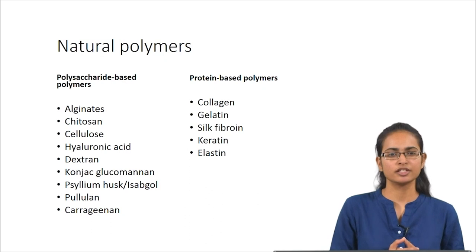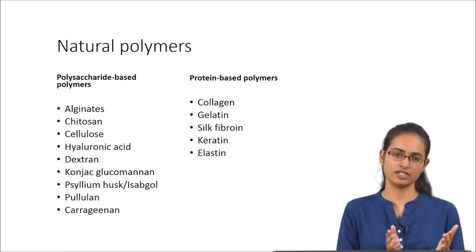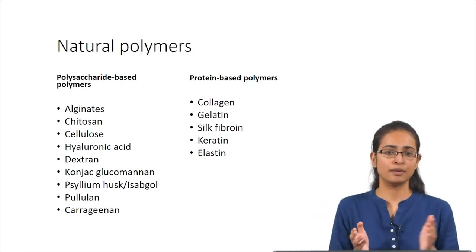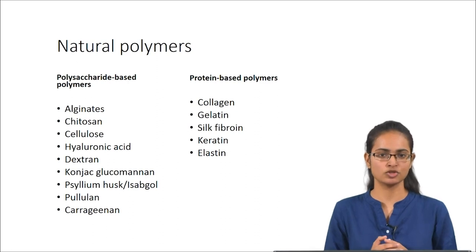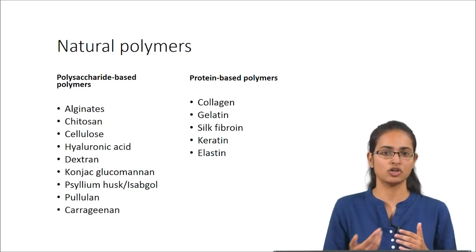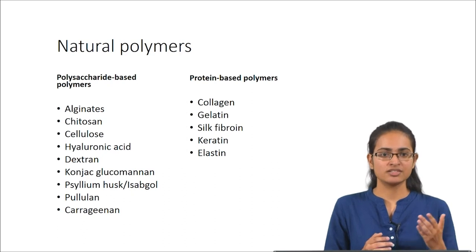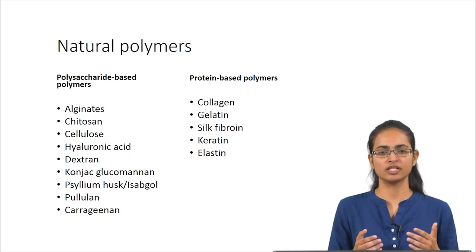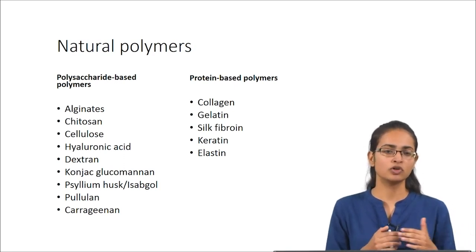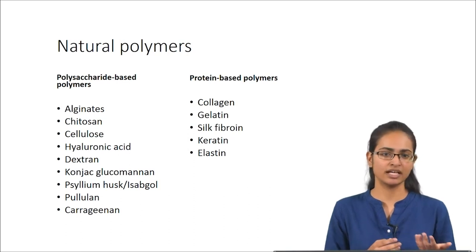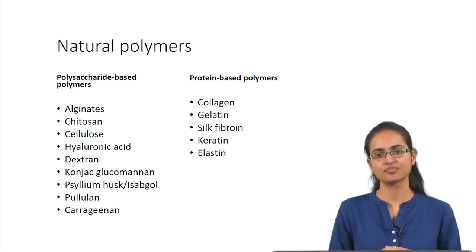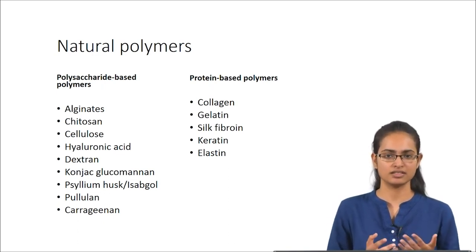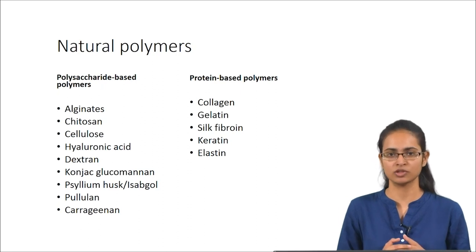Natural polymers used for skin tissue engineering can be polysaccharide-based polymers or protein-based polymers. Examples include alginates, chitosan, cellulose polymers, hyaluronic acid, dextran, pullulan, carrageenan, konjac glucomannan, and isabgol — newer polymers being explored for skin tissue engineering. Protein-based polymers such as collagen, gelatin, silk fibroin, keratin, and elastin are also being explored. This is not an exhaustive list.